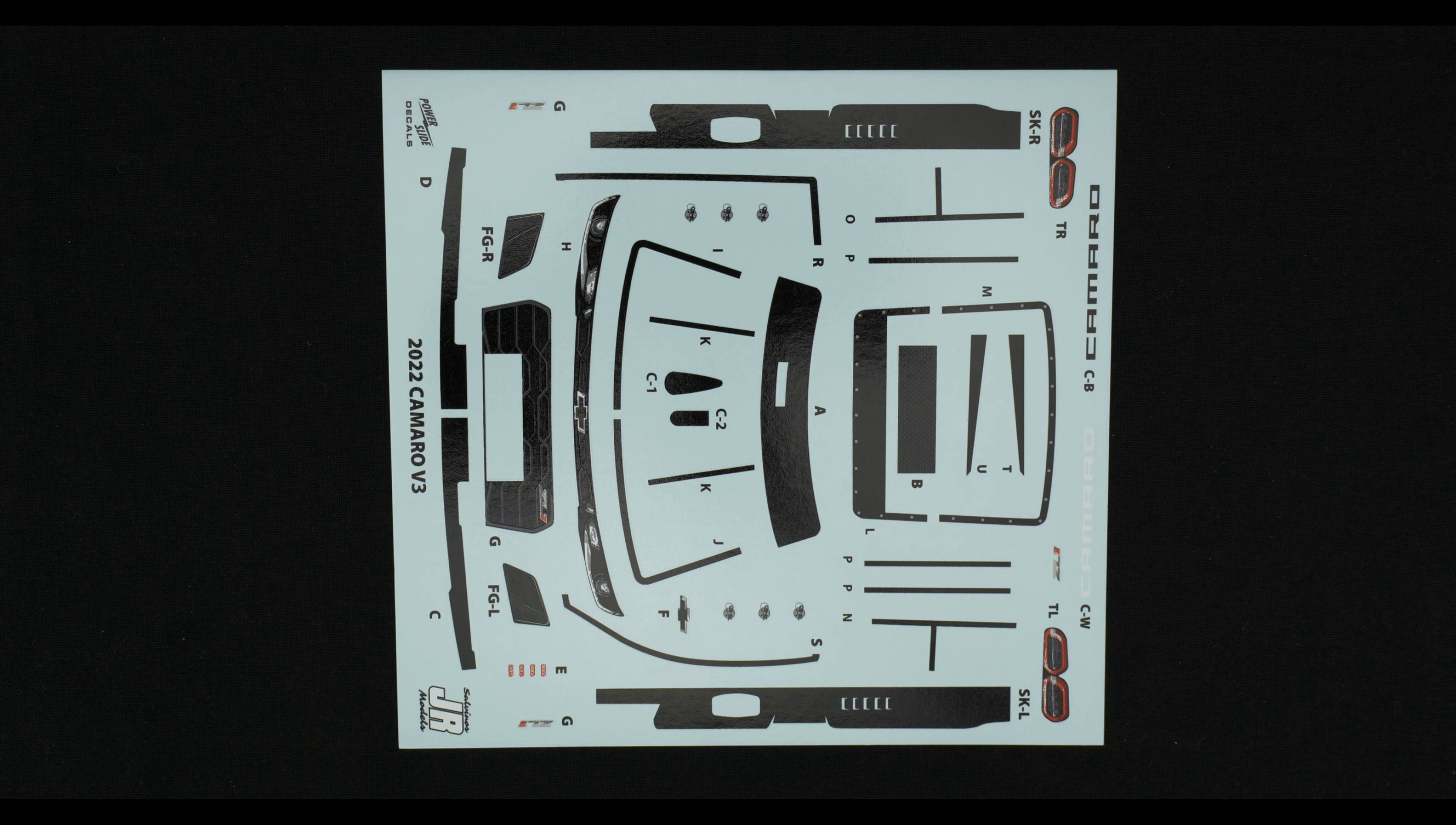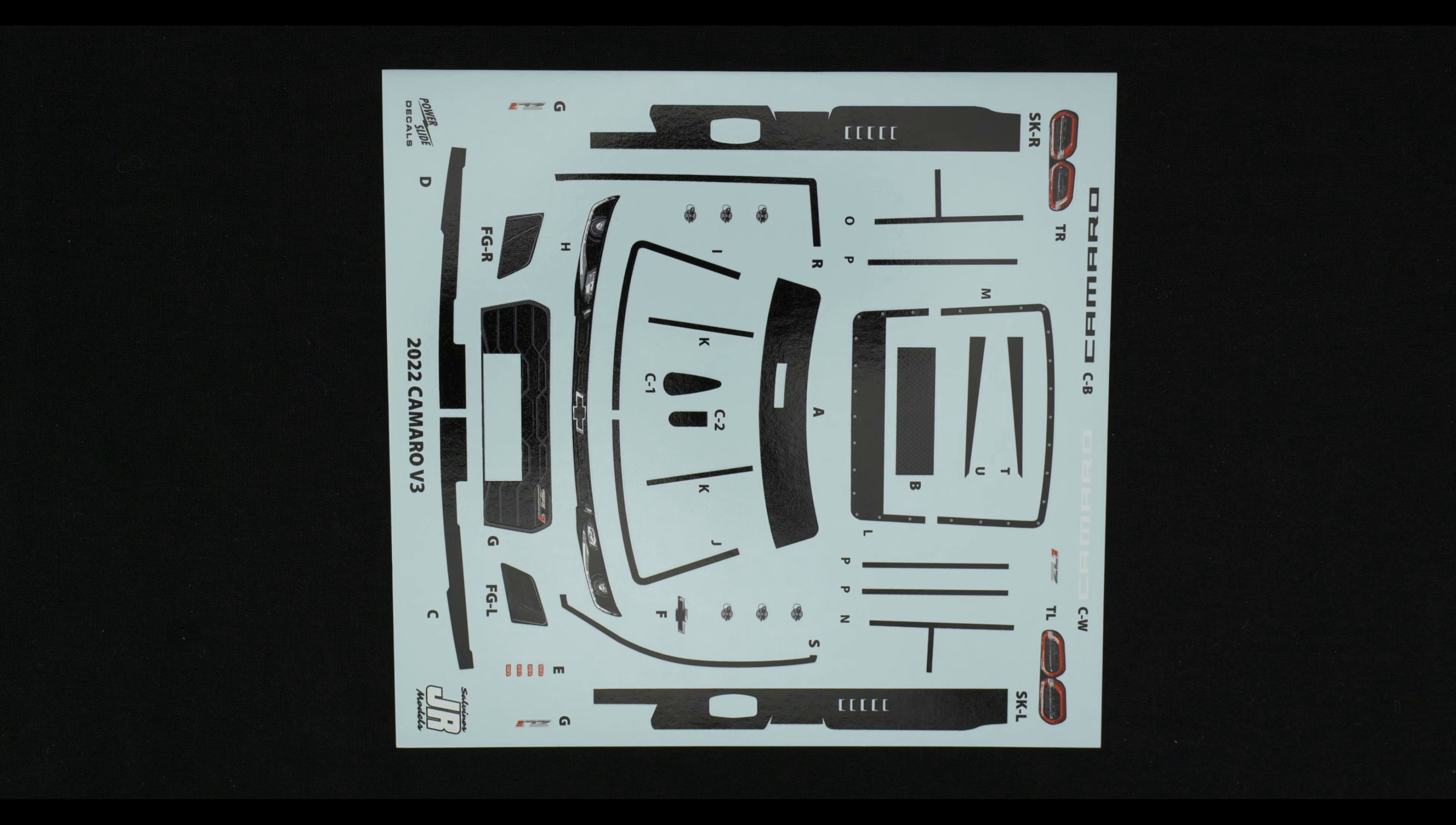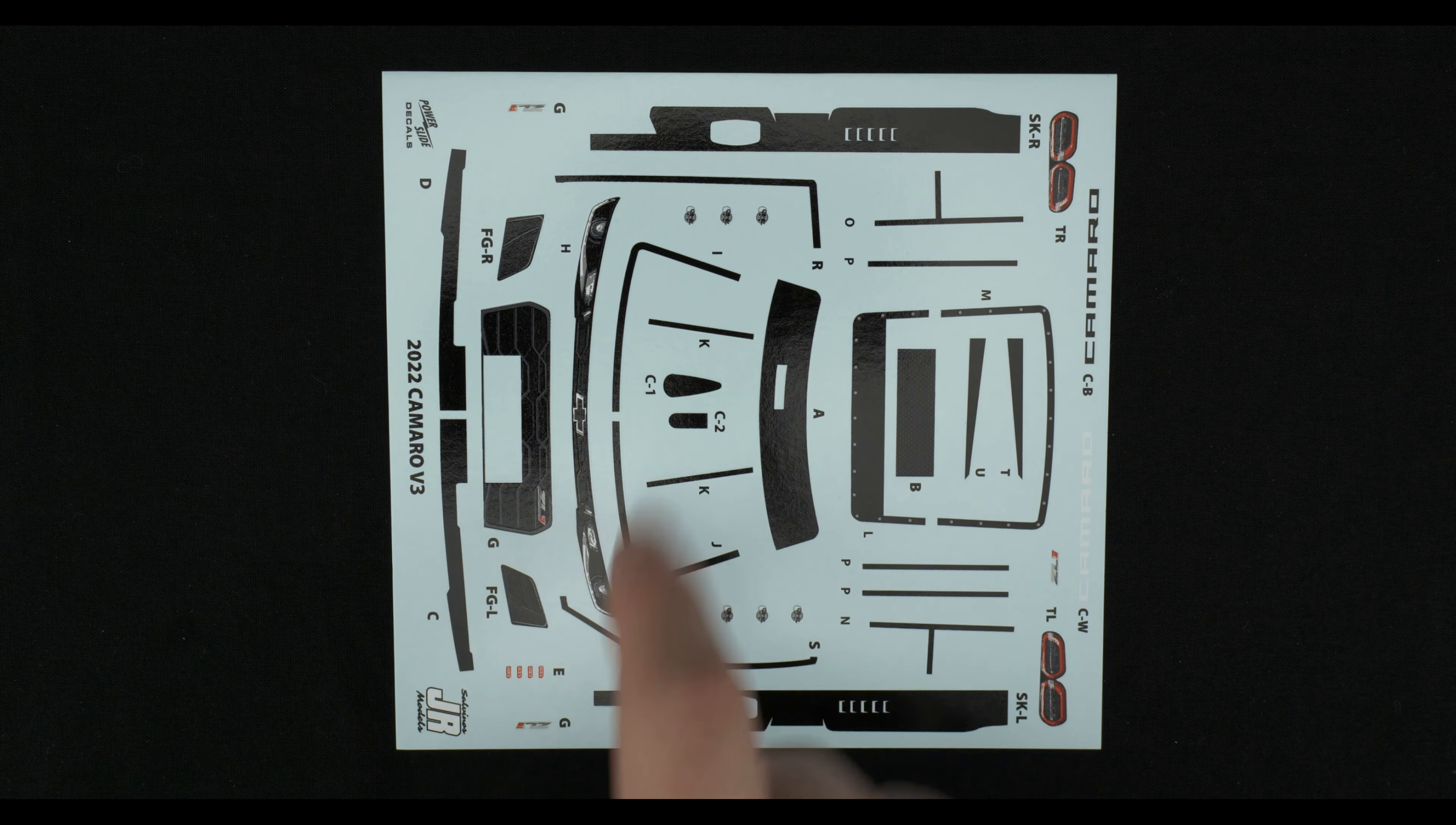Now we're going to take a look at the decals. And we're going to start with what I call the detail decal sheet, which has the front grille, the grills, the headlights. You have BBS wheel decals, ZL1 hood decals. Here we have the side skirt decals, tail light decals, choice of white or black. Camaro wording decals, window trim decals, grill decal, hood pins, camera pod decals there.